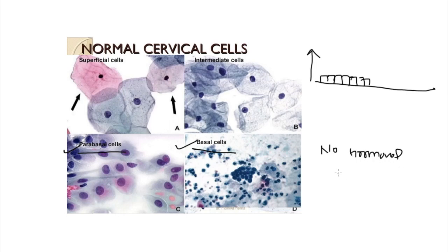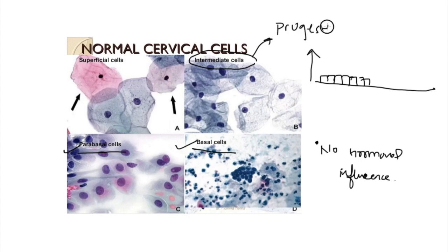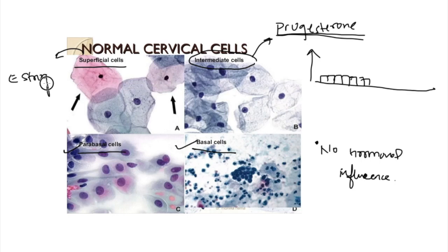During the menstrual cycle, the initial part is predominantly estrogen and the second half is progesterone. When there is no hormonal influence, basal and parabasal cells are prominent. Intermediate cells are present when progesterone is the dominant hormone, and superficial cells are seen when estrogen is predominant.